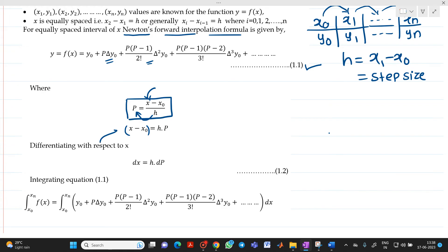Let us differentiate this equation with respect to x. Derivative of x with respect to x is 1. Derivative of x0 with respect to x is 0 because it is a constant, which is equal to h into dp upon dx. From that, I can write dx will be equal to h into dp. Treat this as equation number 2.